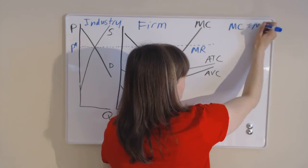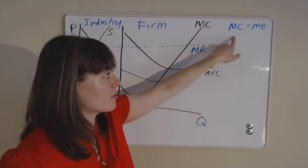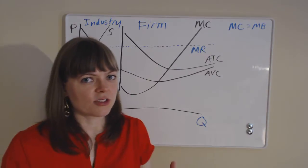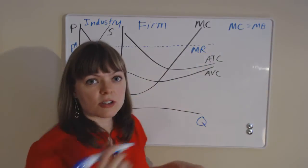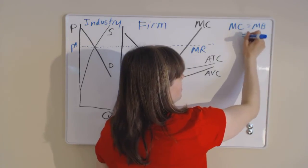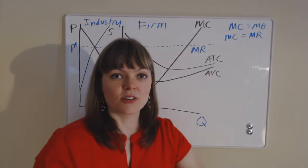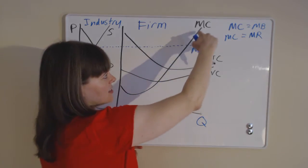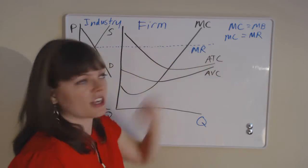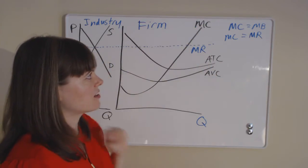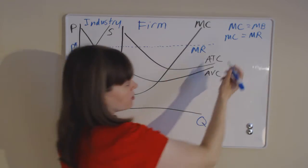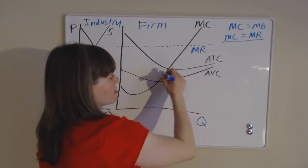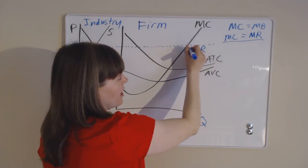The golden rule is always marginal cost equals marginal benefit. We saw this with consumers — for consumers, marginal cost is price and marginal benefit is utility. For a firm, there's no utility, so marginal benefit is marginal revenue — how much you bring in per unit. Marginal cost is the cost of producing something, like the flour and eggs to produce a cupcake. We know the shape of the marginal cost curve, and we choose the quantity where marginal cost equals marginal revenue.